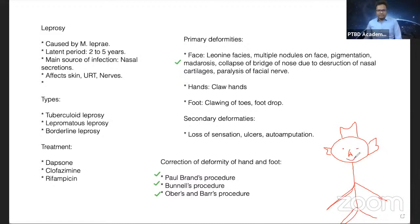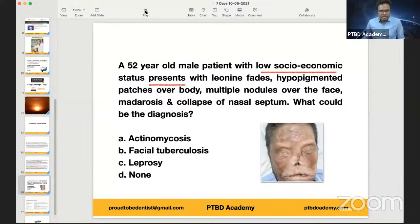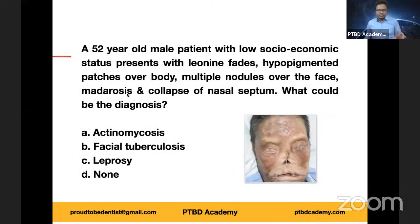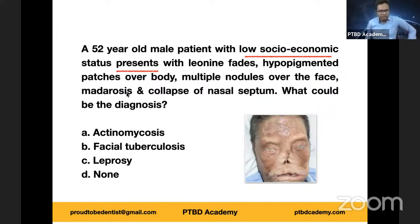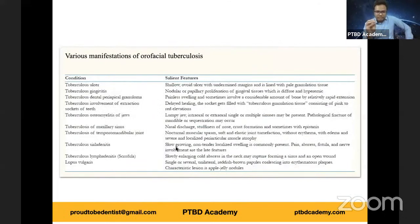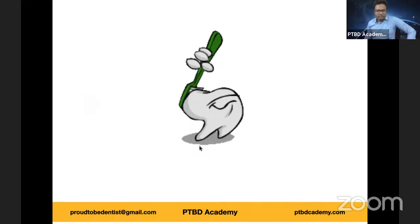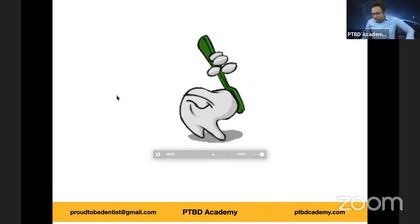Now let's return to the illustration. The case: a 52-year-old male patient with low socioeconomic status — now you understand why that keyword was presented — with leonine facies, hyperpigmented patches, multiple nodules on the face, madarosis, collapse of nasal septum, and loss of the lateral portion of eyebrows. The diagnosis is leprosy. For homework, also consider differences between lepromatous and tuberculoid leprosy, and those surgical procedures.